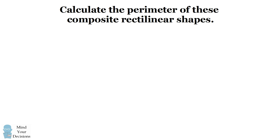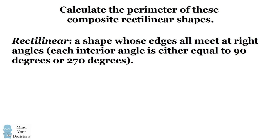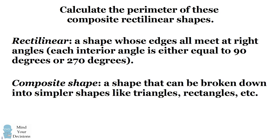To get started, I'll define a couple of terms. A rectilinear shape is one whose edges all meet at right angles. Each interior angle is either equal to 90 degrees or 270 degrees. A composite shape is one that can be broken down into simpler shapes like triangles, rectangles, and so on.